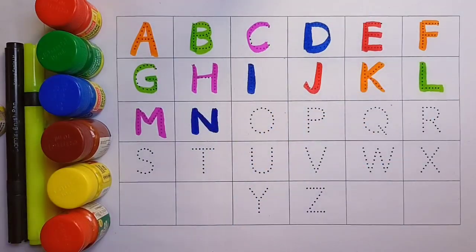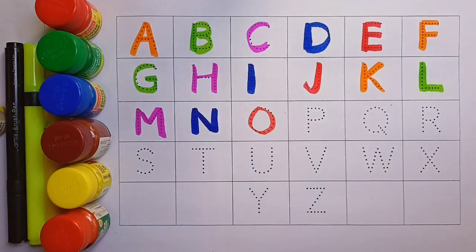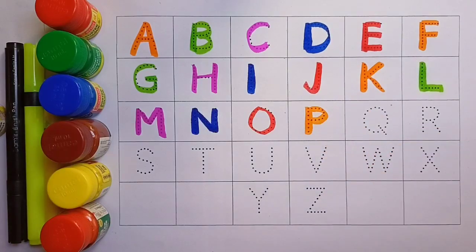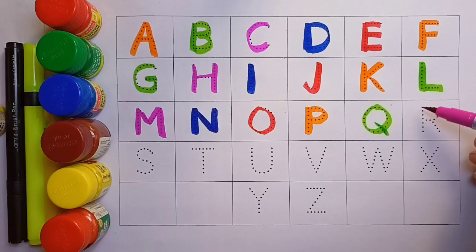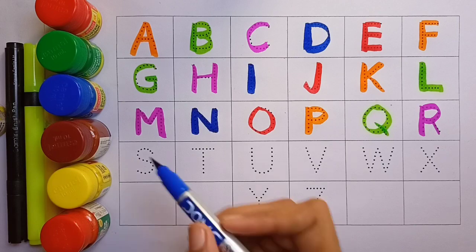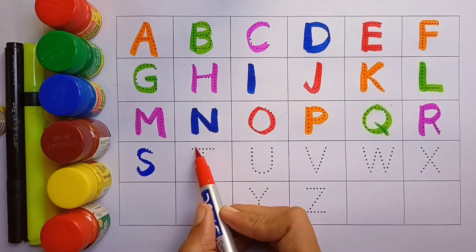Blue color. O, O for Orange. Red color. P, P for Peacock. Orange color. Q, Q for Twin. Green color. R, R for Red. Pink color. S, S for Sun. Blue color. T, T for Tiger.